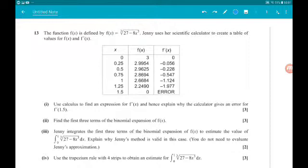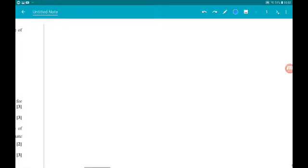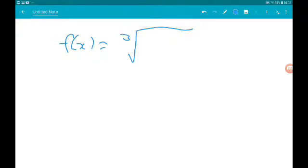Part 1. The answer is to use calculus to find an expression for f'(x) and hence explain why the calculator gives an error for f'(1.5). So f(x) is the cube root of 27 minus 8x cubed. That is 27 minus 8x cubed to the power of one third.